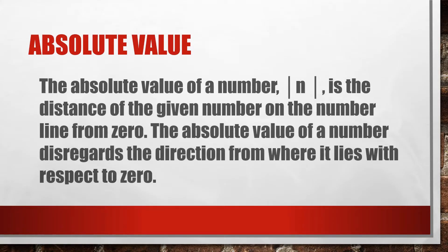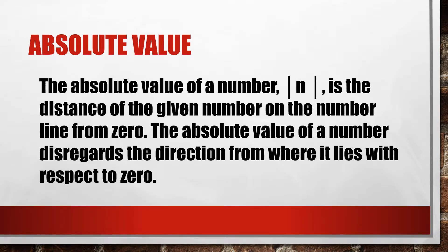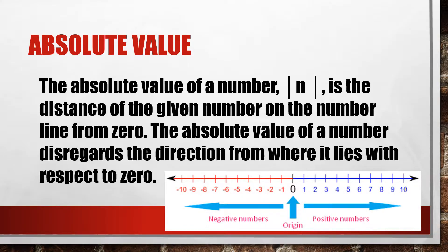Absolute value. The absolute value of a number, or the absolute value of n, is the distance of the given number on the number line from zero. This tells you how far a number is away from zero. The absolute value of a number disregards the direction from where it lies with respect to zero — whether going left, right, upward, or downward. When you talk about distance, it is always positive.